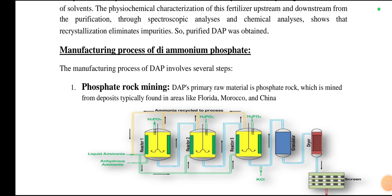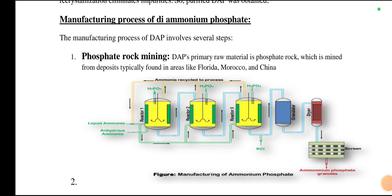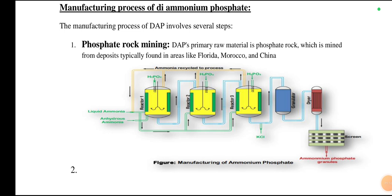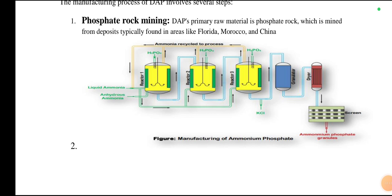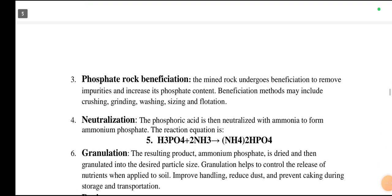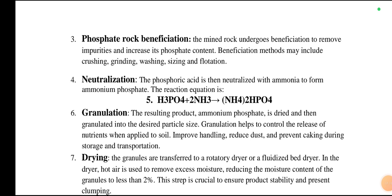The manufacturing process of diammonium phosphate involves several steps. The first step is phosphate rock mining: the primary raw material is phosphate rock, which is mined from deposits typically found in areas like Florida, Morocco, and China. A manufacturing diagram shows the reactors, granulator, and dryer used in the process. The next step is phosphate rock beneficiation: the mined rock undergoes beneficiation to remove impurities and increase its phosphate content. Beneficiation methods include crushing, grinding, washing, sizing, and flotation.